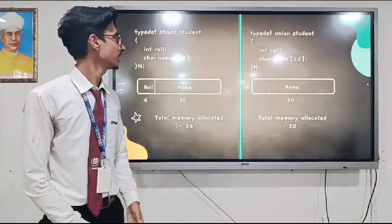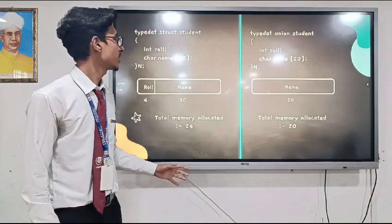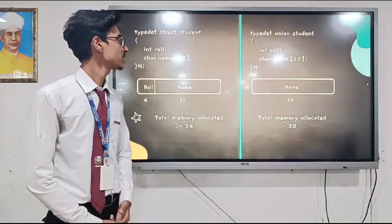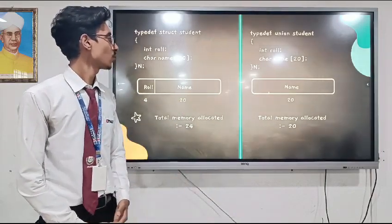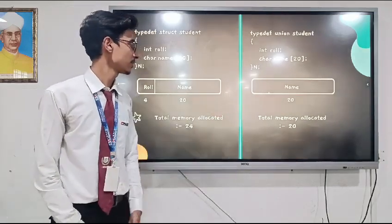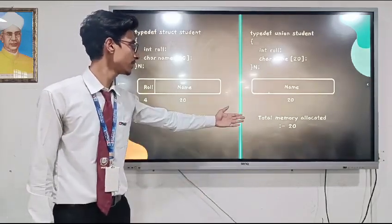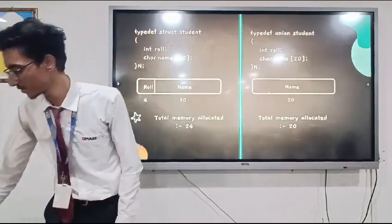But on the other hand, in the union, the size of character data type is greater than the size of integer data type. So all the memory will be allocated to the name data type. So the total memory allocated is 20. Thank you.